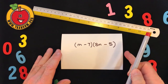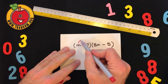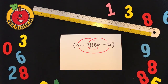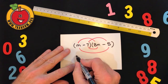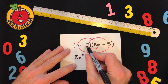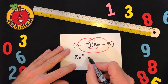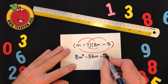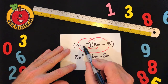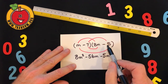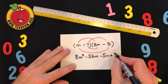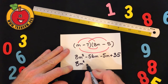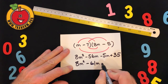Here's another example. Left eyebrow, right eyebrow, nose, mouth — then start the multiplications. The left eyebrow: M times 8M is 8M squared. The nose: minus 7 times 8M is minus 56M. The mouth gives minus 5M. And the right eyebrow: minus 7 multiplied by minus 5 is positive 35. Collecting together the like terms, that leaves us with 8M squared minus 61M plus 35. And that's the answer.